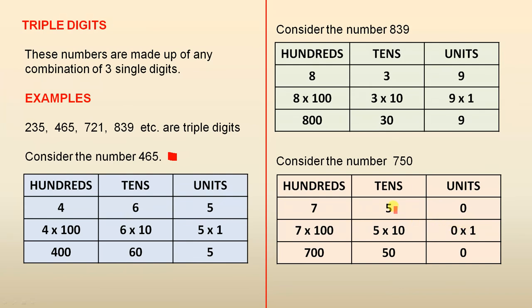The 5 is in the tens column, so it's 5 tens, which is 50. And the 7 is in the hundreds column, which is 7 times 100, which is 700. 700 plus 50 plus 0 is 750, and that's the number we started with.